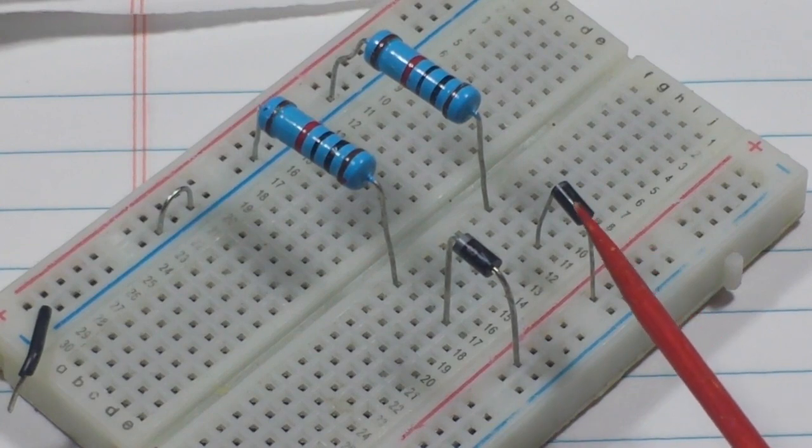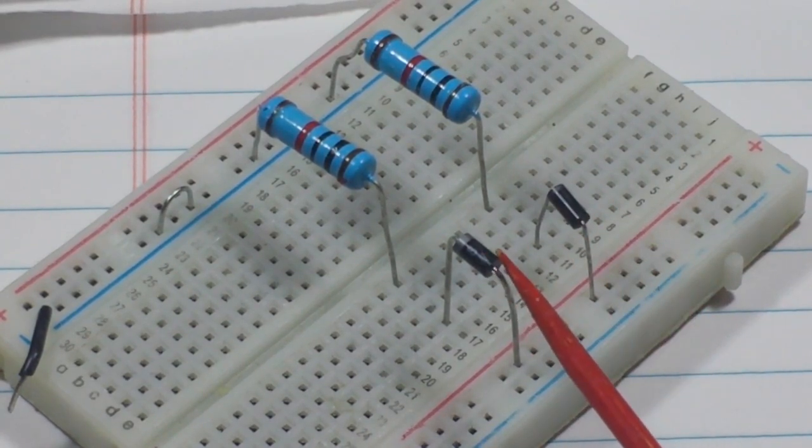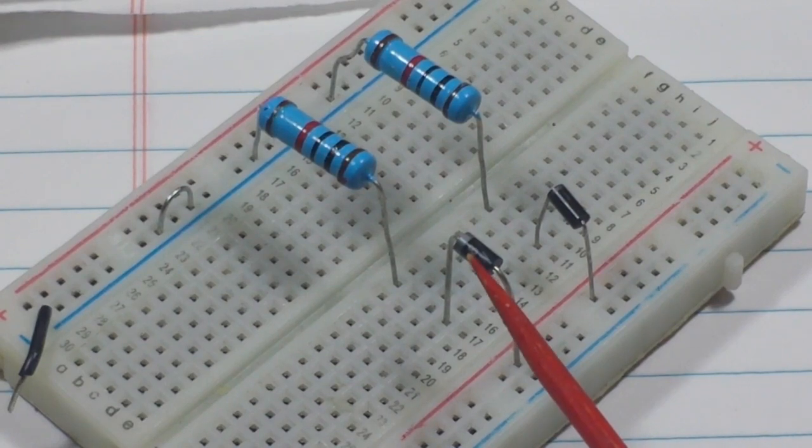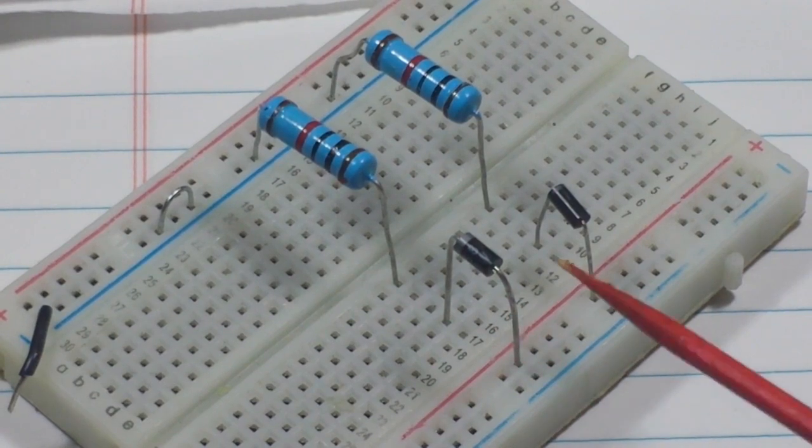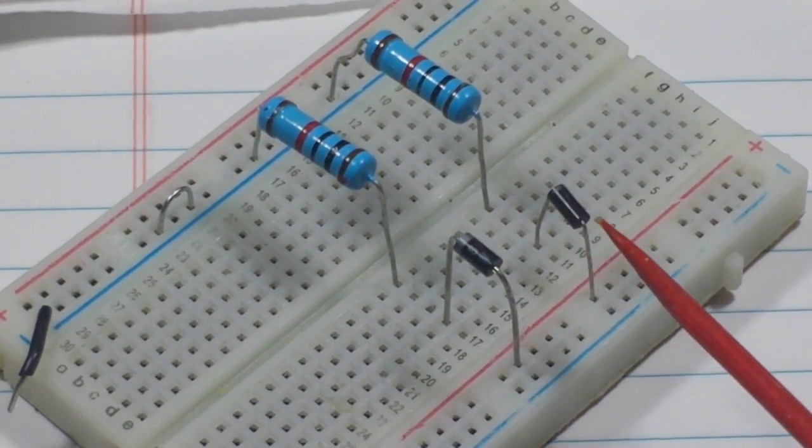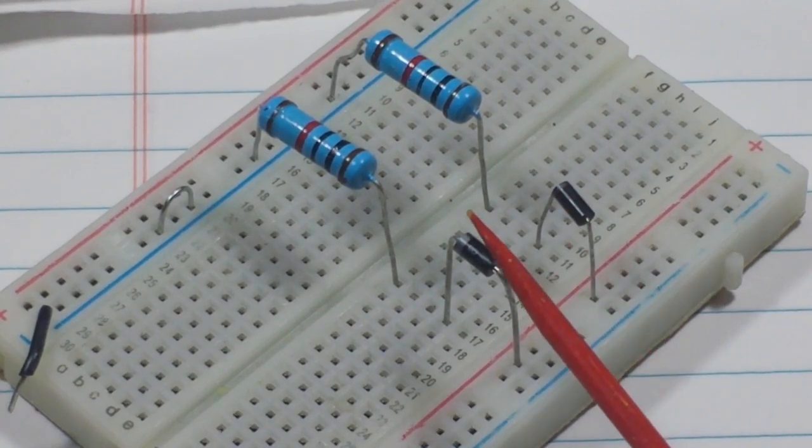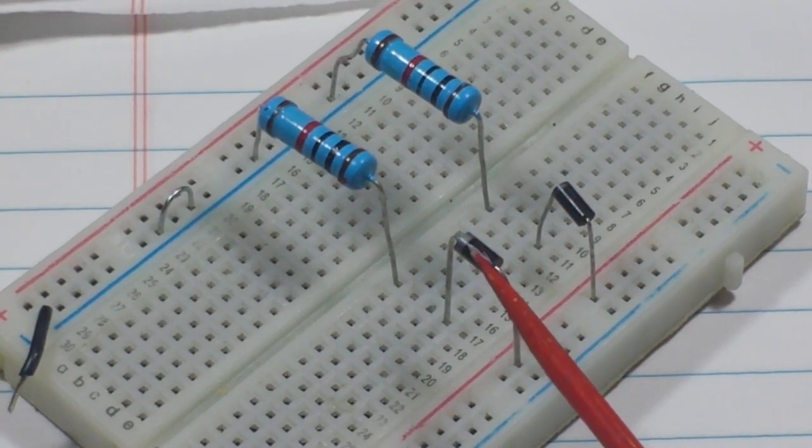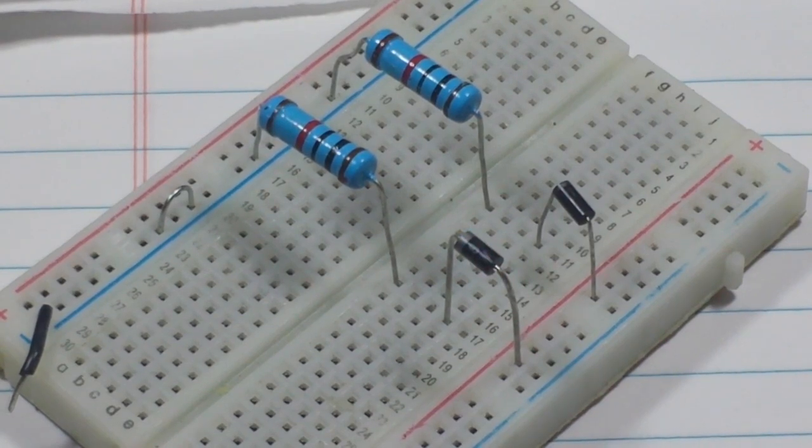Now I have two diodes here, this is the 1N4007, your standard silicon diode, and this is a 1N5817, this is a Schottky diode. You can see size-wise they are basically the same, they look the same, they have the same markings, there's the little line indicating the cathode, but in practice they're quite different. So let's talk about why.